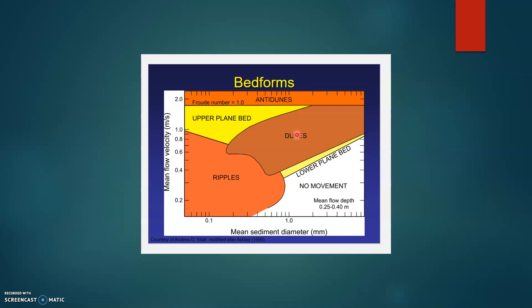Upper plane beds are formed when you have a high mean velocity and a small sediment diameter. Lower plane beds on the other hand are formed when you have a high mean sediment diameter and a low mean flow velocity.